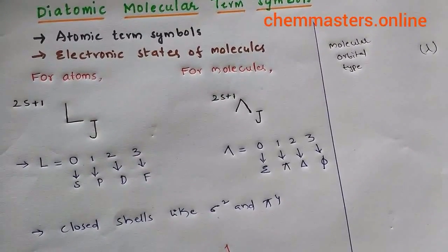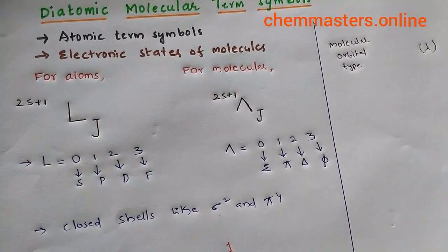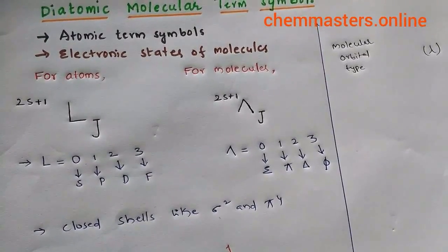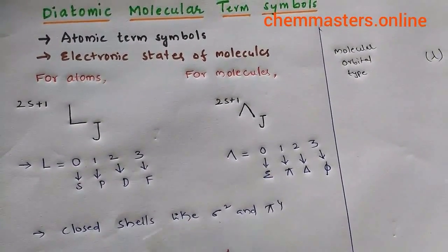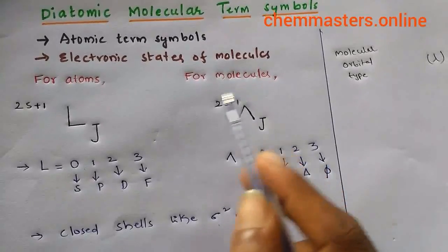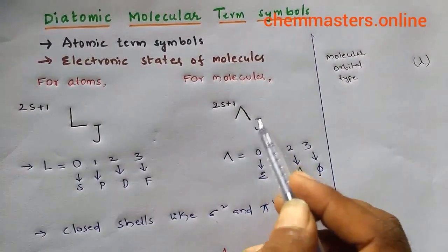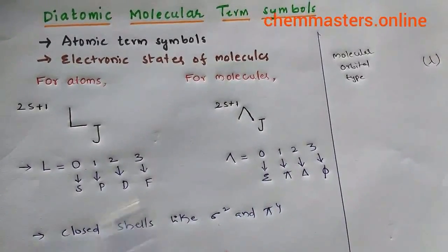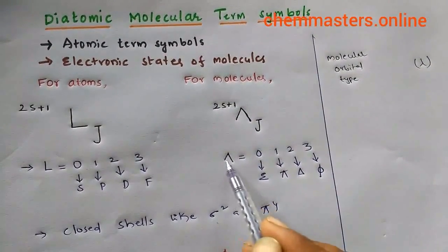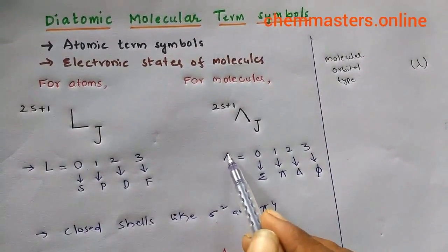For molecules, we have this arrangement: Lambda, S, J, and 2S+1. This Lambda indicates or denotes molecular term symbols, meaning total molecular angular momentum quantum number.